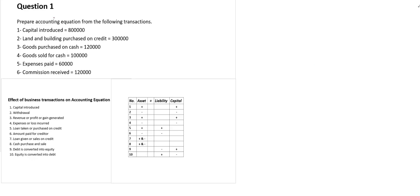Bismillahirrahmanirrahim. Now let us go through an example of the accounting equation. We have to prepare the accounting equation from the following transactions — six transactions are given and from these transactions we have to prepare the accounting equation.